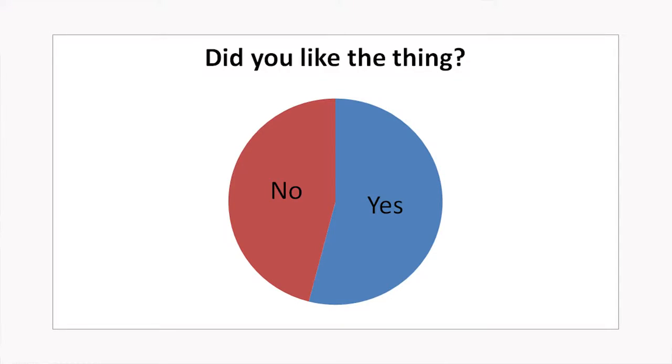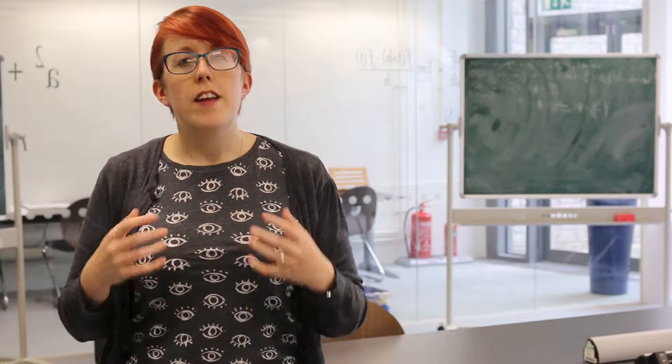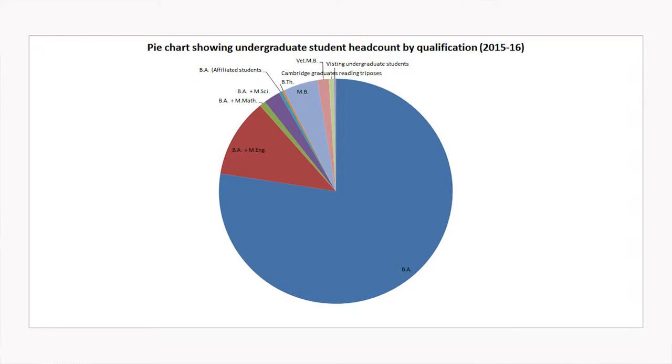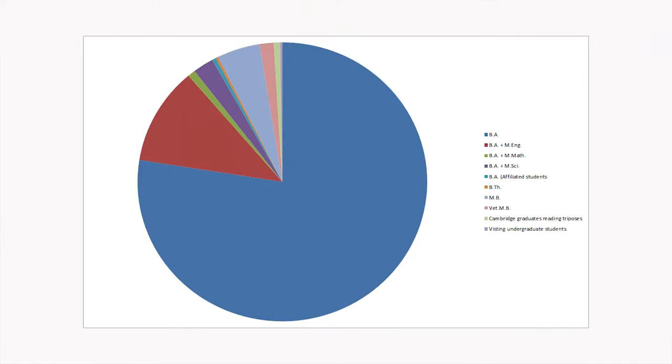While pie charts are useful for at-a-glance understanding of really simple information, they can also be quite misleading as they require an audience to judge area, which we're actually quite bad at, especially if your pie chart has lots of individual wedges.